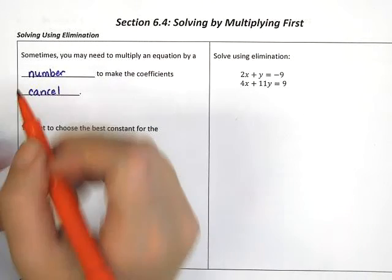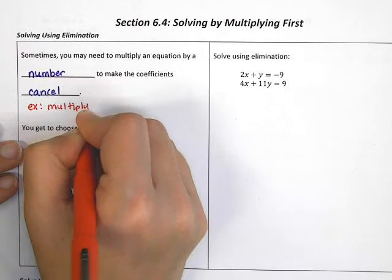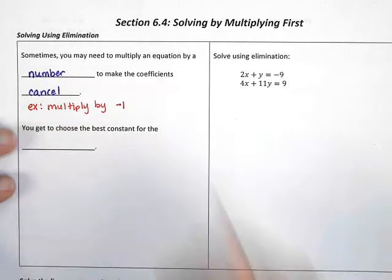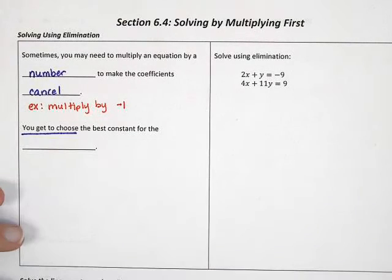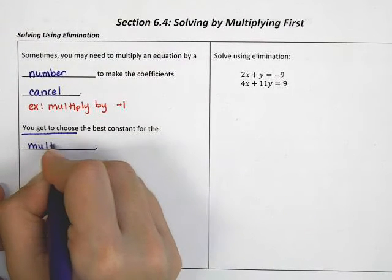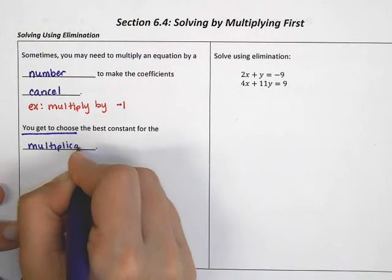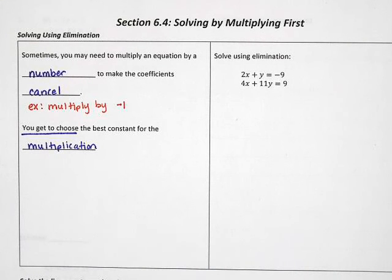Yesterday we saw, for example, that we might sometimes need to multiply by negative 1 in order to change one of the numbers to a negative so that it will cancel. But the key here is that you get to choose the best number for the multiplication. So if it seems like multiplying by negative 1 won't do the trick, you can pick a different number — it is up to you to choose. So let's look at an example.